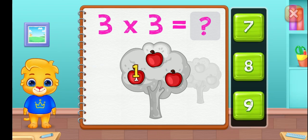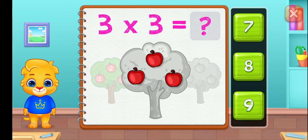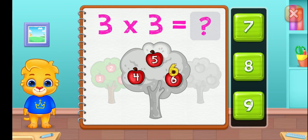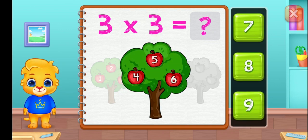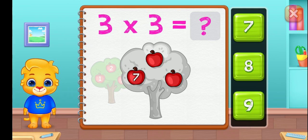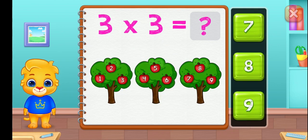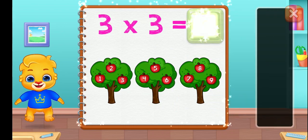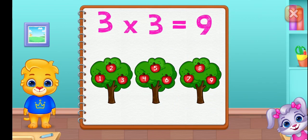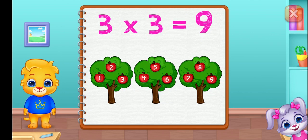One, two, three, four, five, six, seven, eight, nine. Three groups of three equals nine.